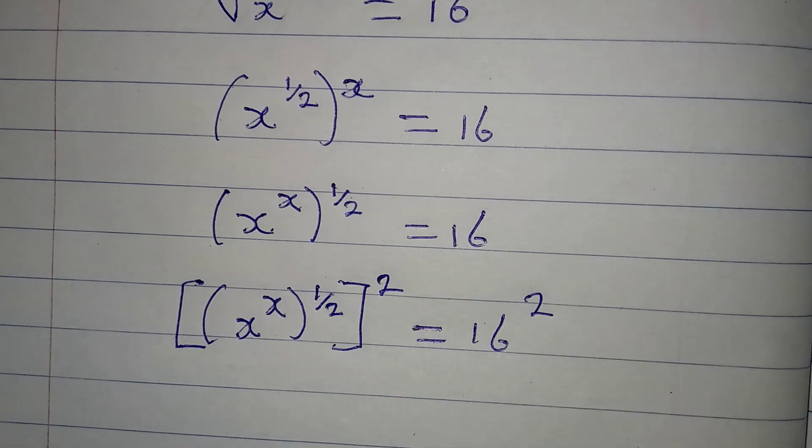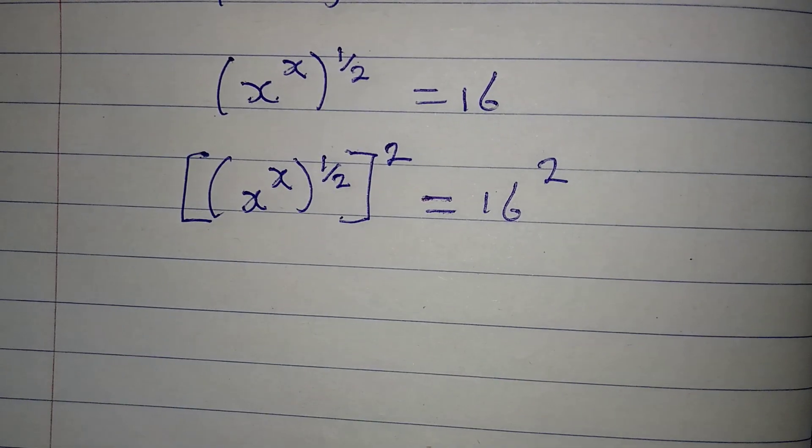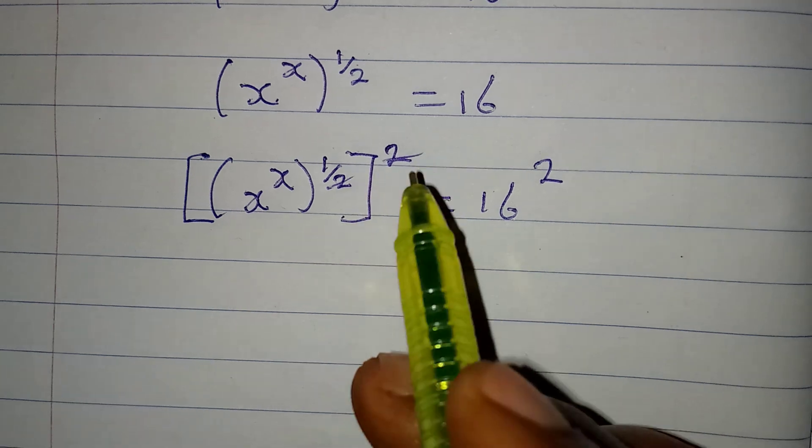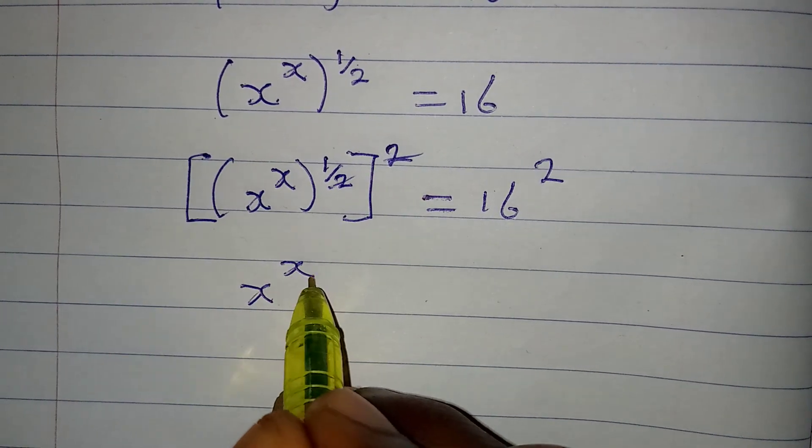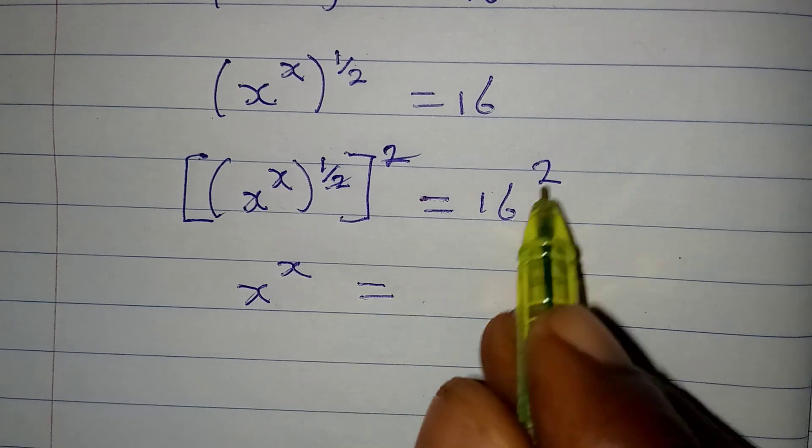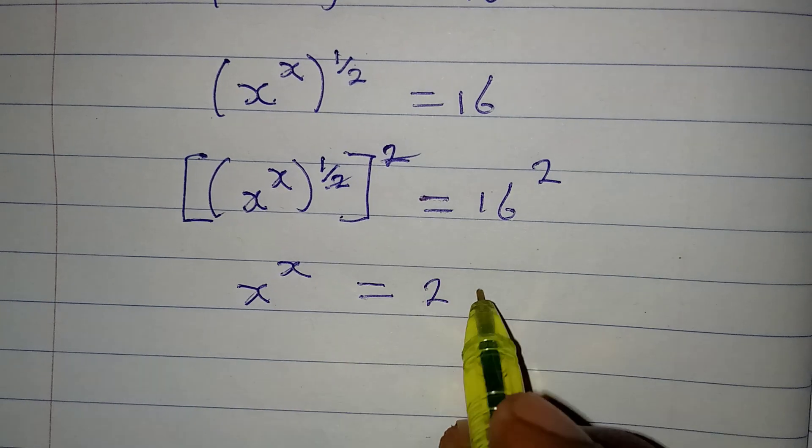From here, this will cancel this and we are having x to the power of x which is equal to 16 squared, and it is 256.